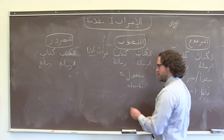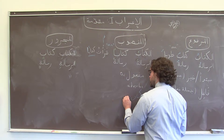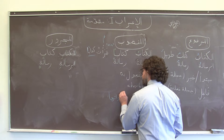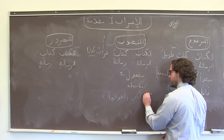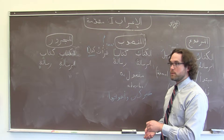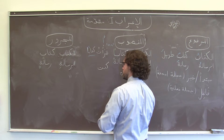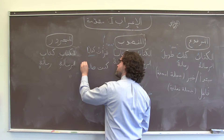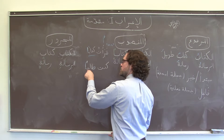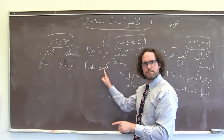We're also going to see منصوب on the direct object of كان and its sisters — there's a separate video on that. So if كان or one of its sister verbs has a direct object, the خبر is going to be منصوب. If I want to say 'I was a student,' I would say كنتُ طالِبًا, where this منصوب ending is marking طالب as the object of كان.